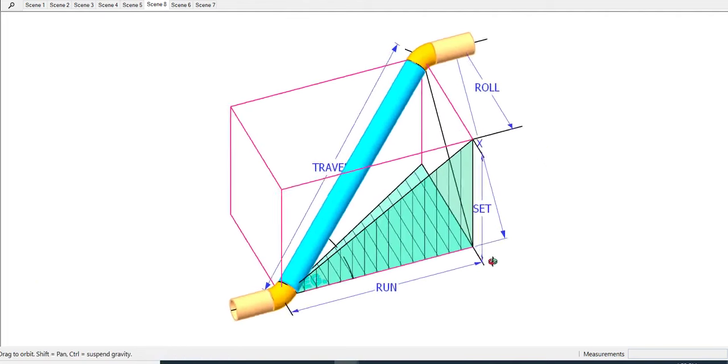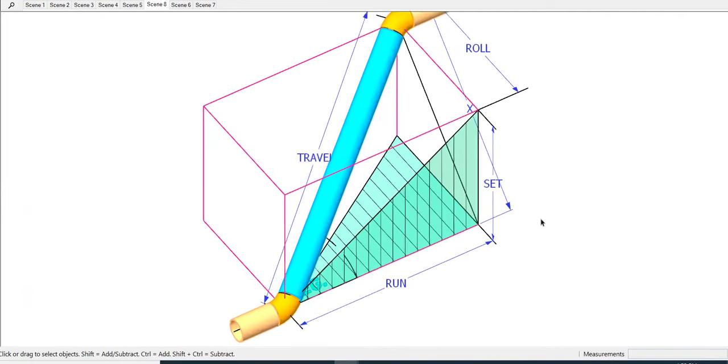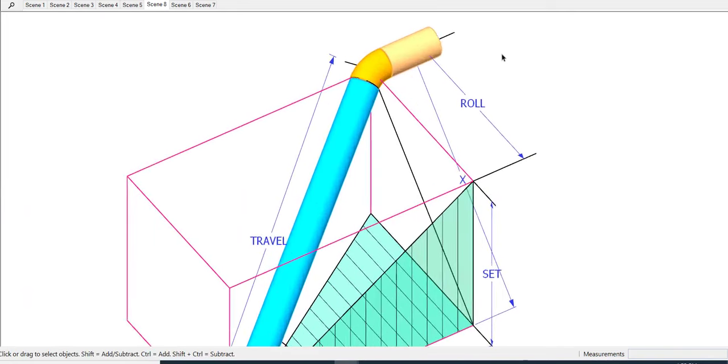Hi friends, welcome to my new tutorial. In this tutorial, I will teach you how to calculate the cut length of a pipe spool in a double rolled offset piping.